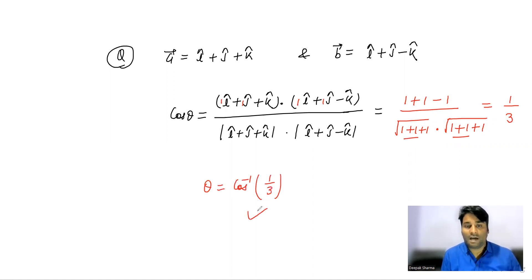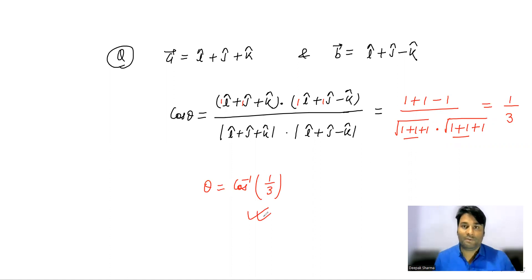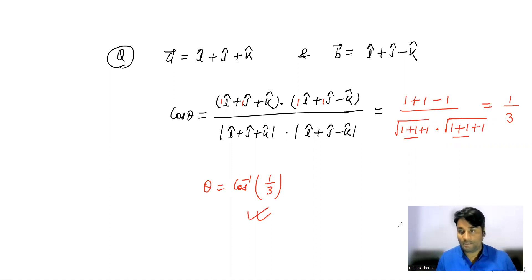So from here theta equals cos inverse of 1 by 3. This is how you can easily find the angle between two vectors.